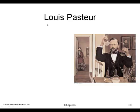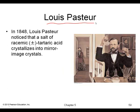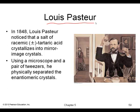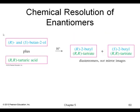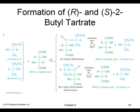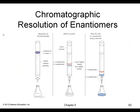Louis Pasteur was the first to discover chiral compounds and separate them. Back in 1848, he used a microscope and a pair of tweezers to physically separate enantiomeric crystals, accomplishing the first artificial resolution of enantiomers. Today there are other ways to achieve resolution through chemical reactions.